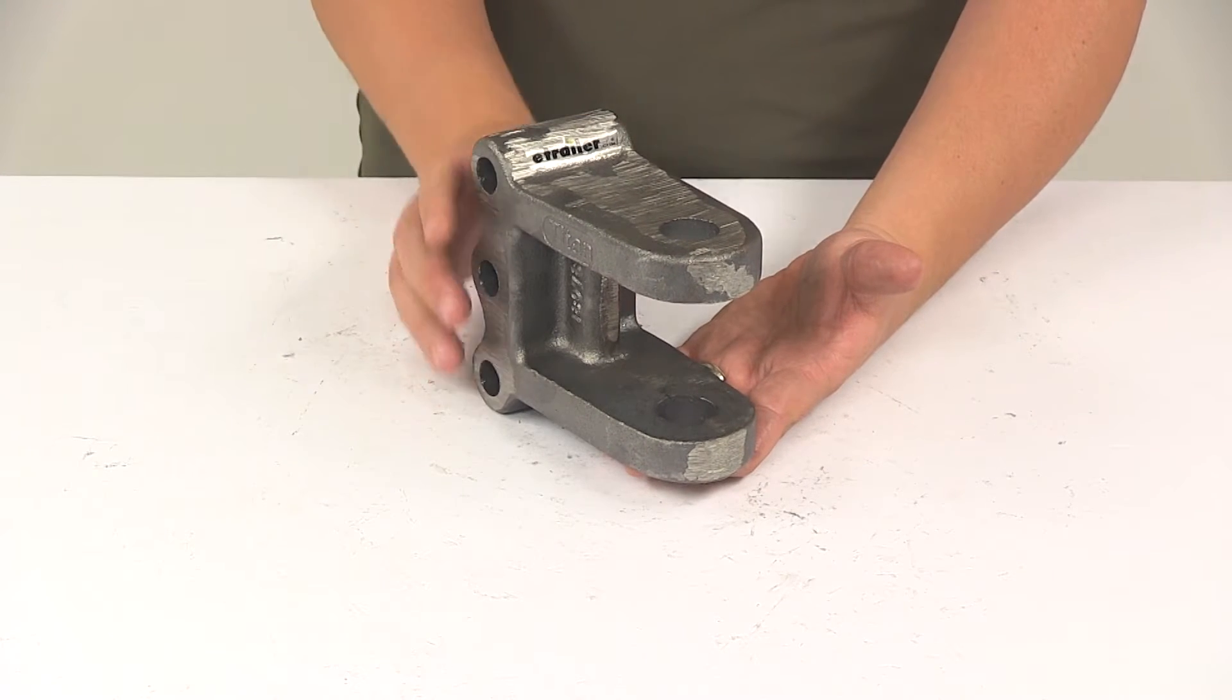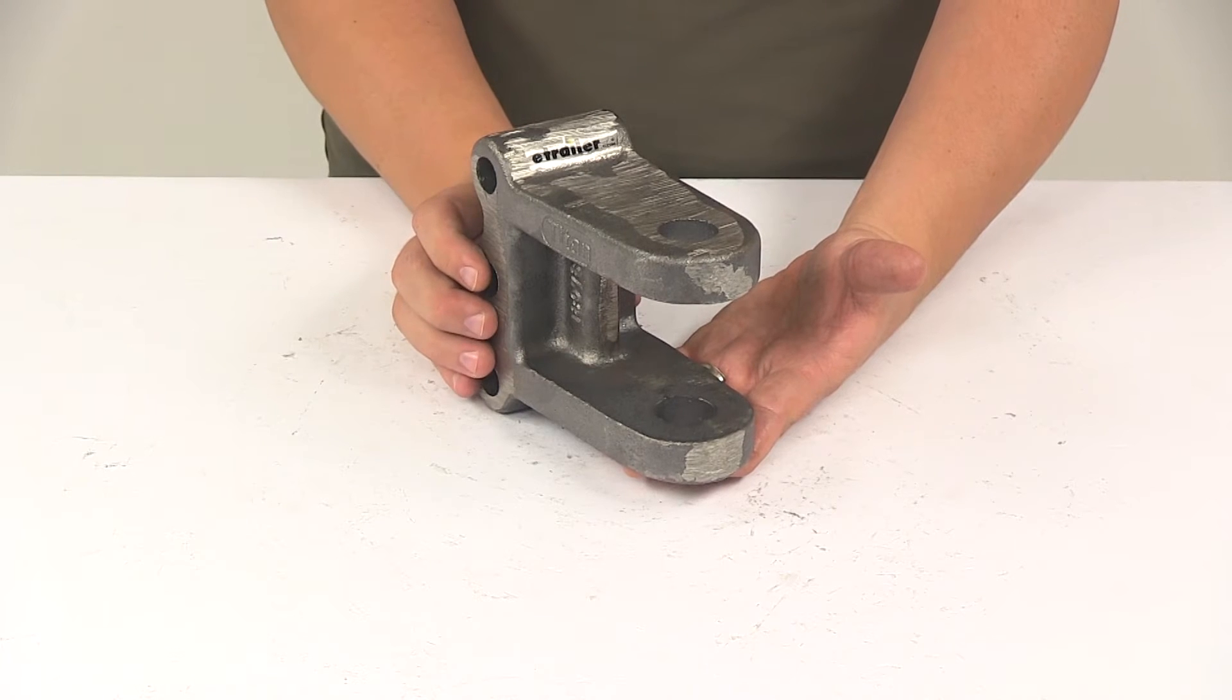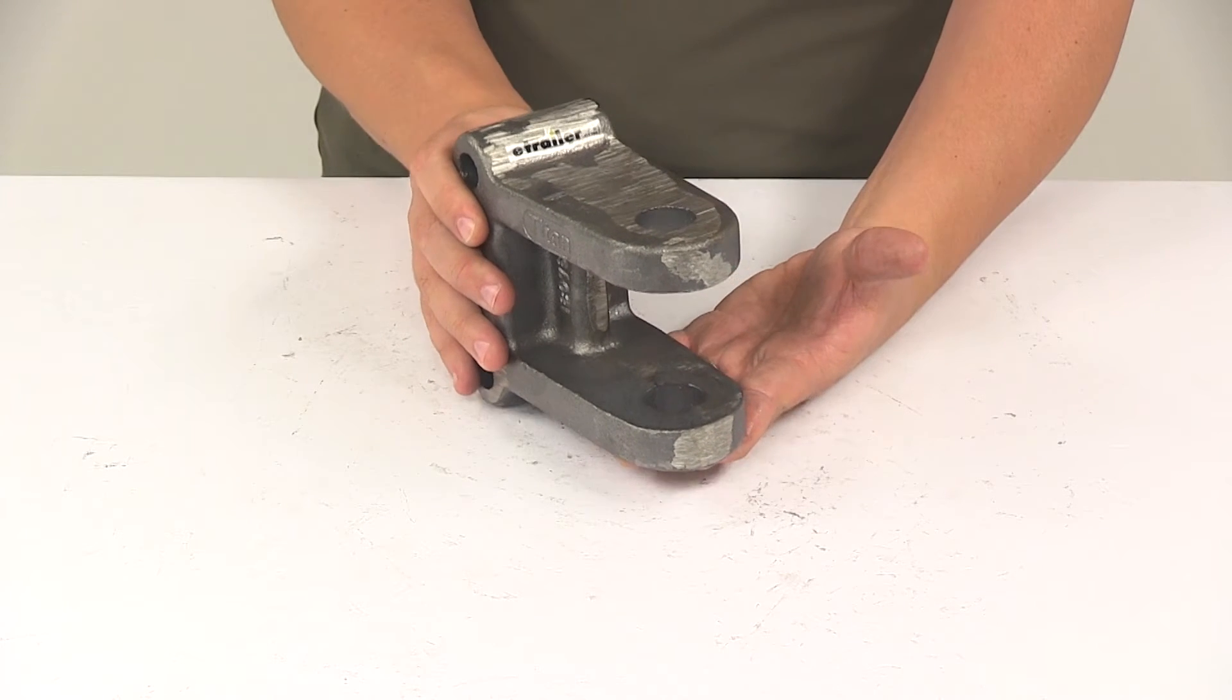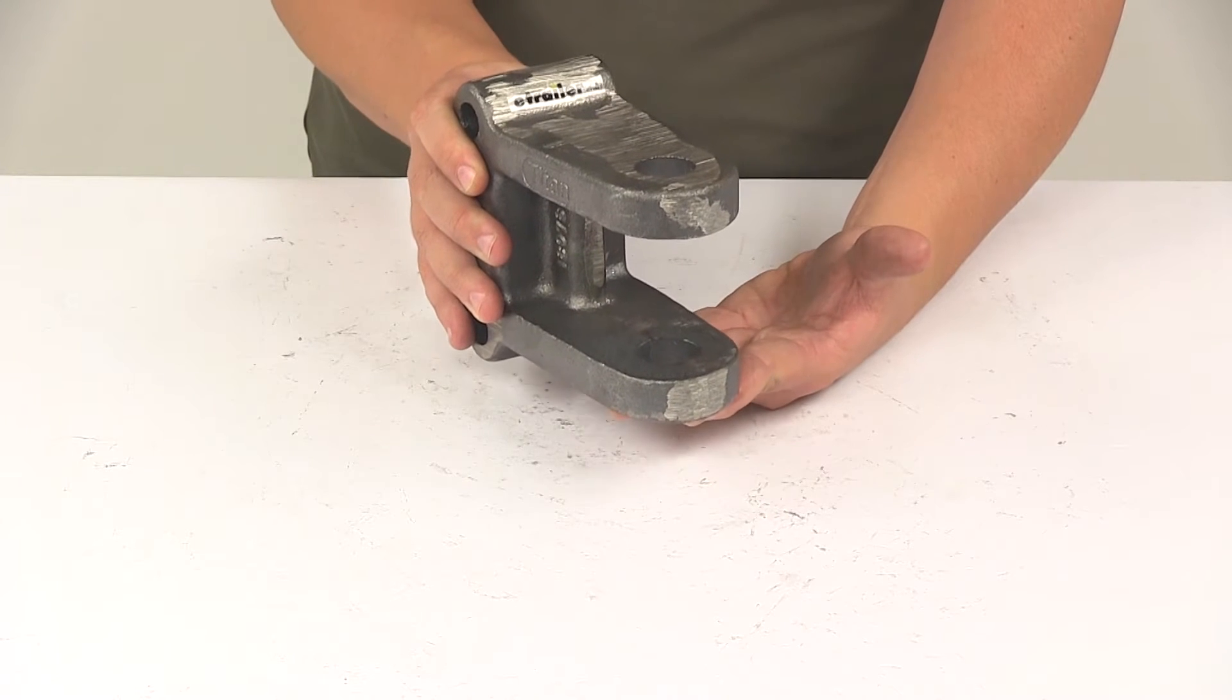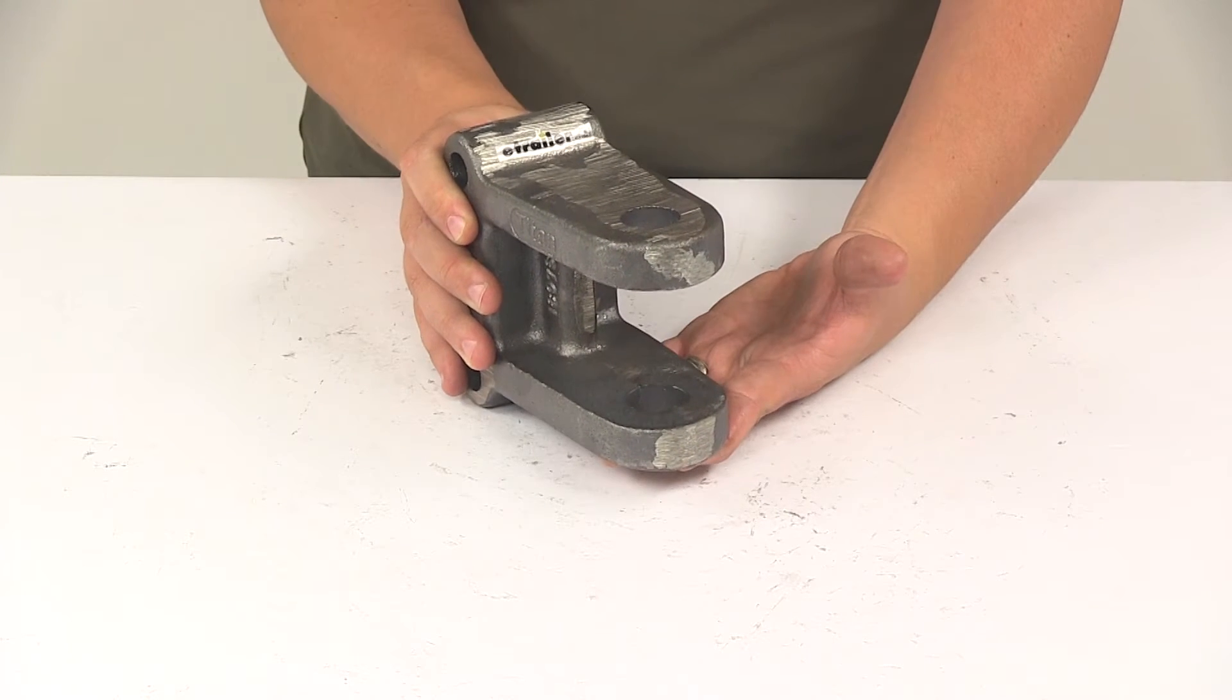So this piece right here would actually fit into a channel mount. It needs to have an inner width of three inches and then you can slide this up and down to adjust the positioning to fit your application.